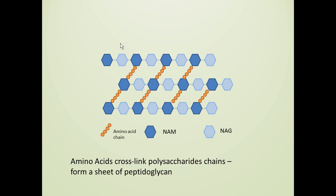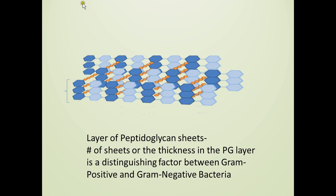The main difference between the gram-positive and gram-negative bacterial cell wall is the number of sheets used. In gram-positive bacteria, there is a thick layer of peptidoglycan composed of many sheets, whereas in gram-negative bacteria, it is a thin layer of peptidoglycan composed of only one or two sheets.